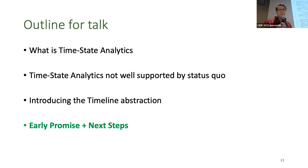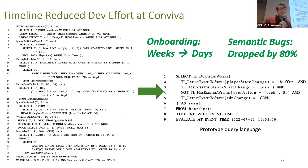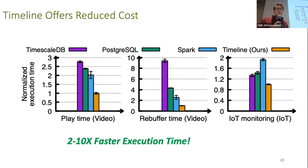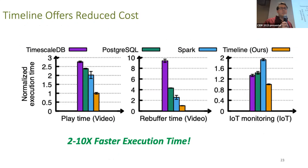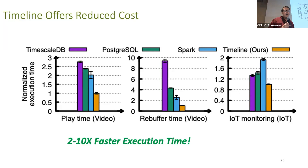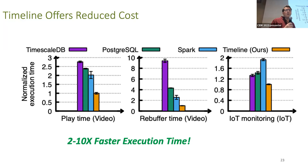The timeline abstraction offers real wins at Conviva. It used to take weeks for a new developer to create their first metric and there were lots of subtle bugs. When we rewrote our main production data processing stack using the timeline abstraction, developer onboarding time and bugs dropped dramatically. On performance, we microbenchmarked timeline-based implementations against Postgres, Spark, and TimescaleDB in a single-node, single-thread setup on synthetic workloads. Even our unoptimized prototype beats these mature systems by 2 to 10x. We're excited to build a richer benchmark set and explore future optimizations, including possible hardware acceleration for timeline operators.